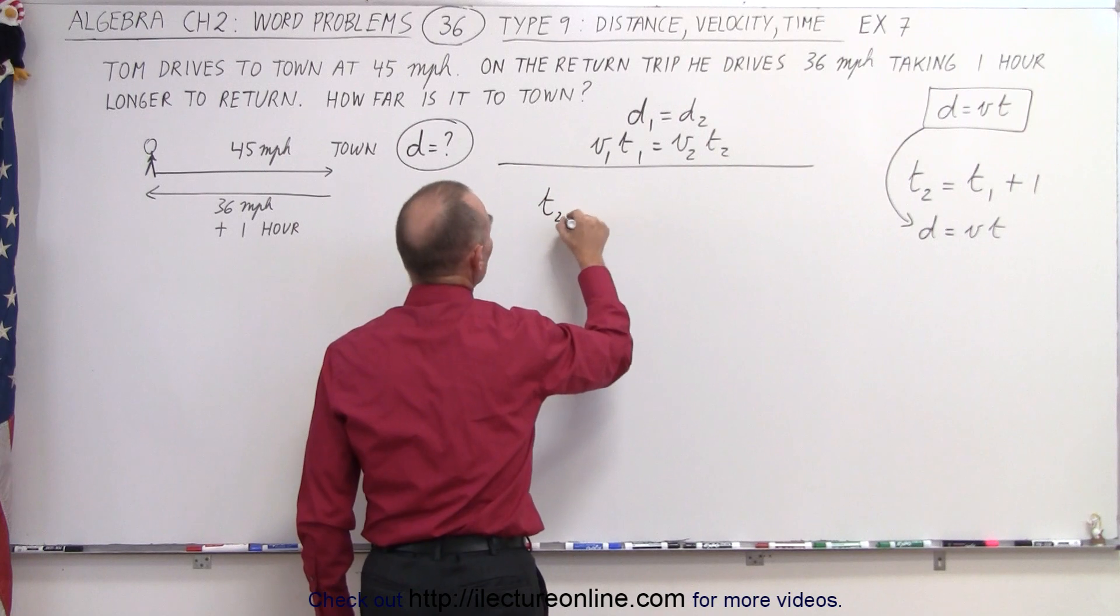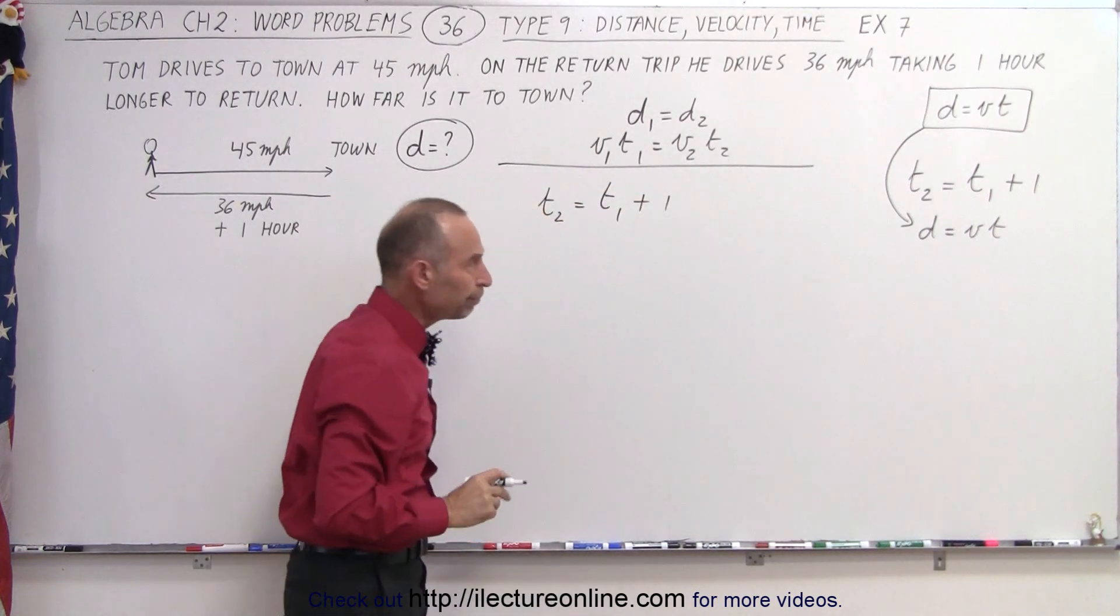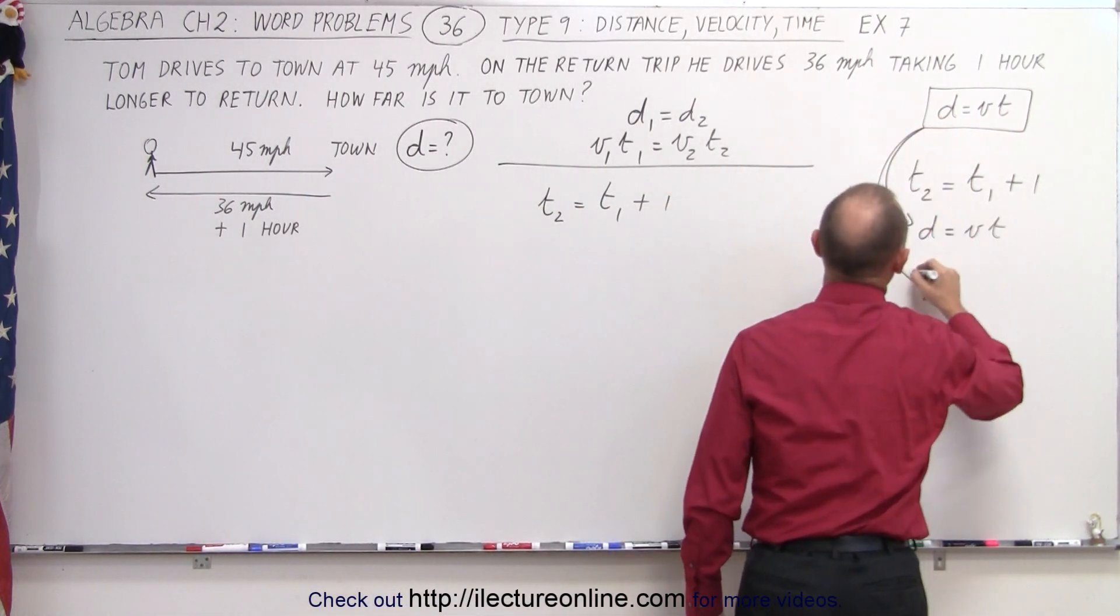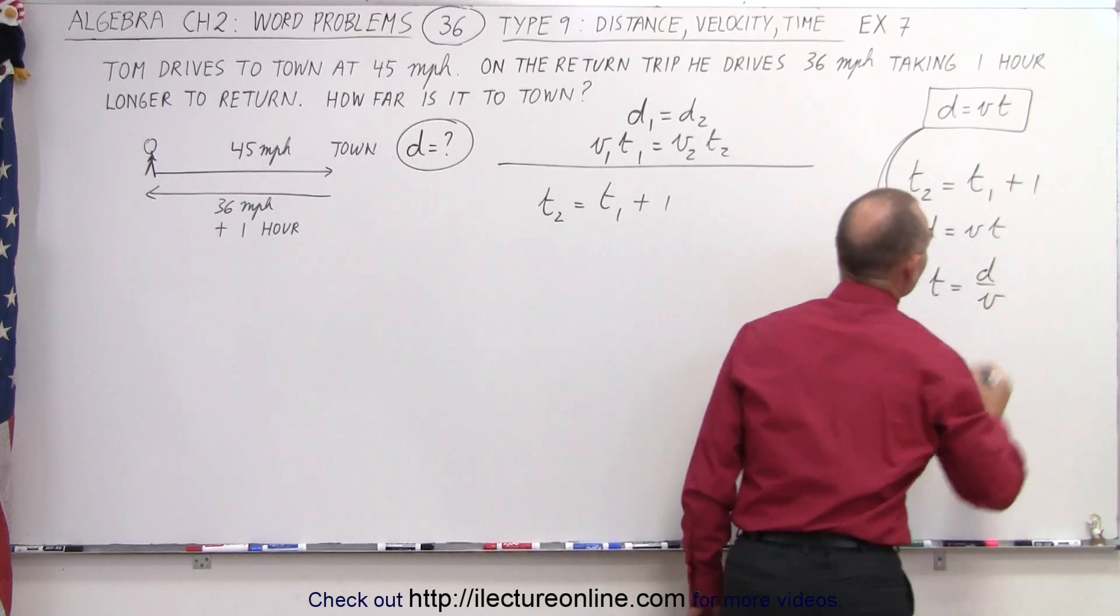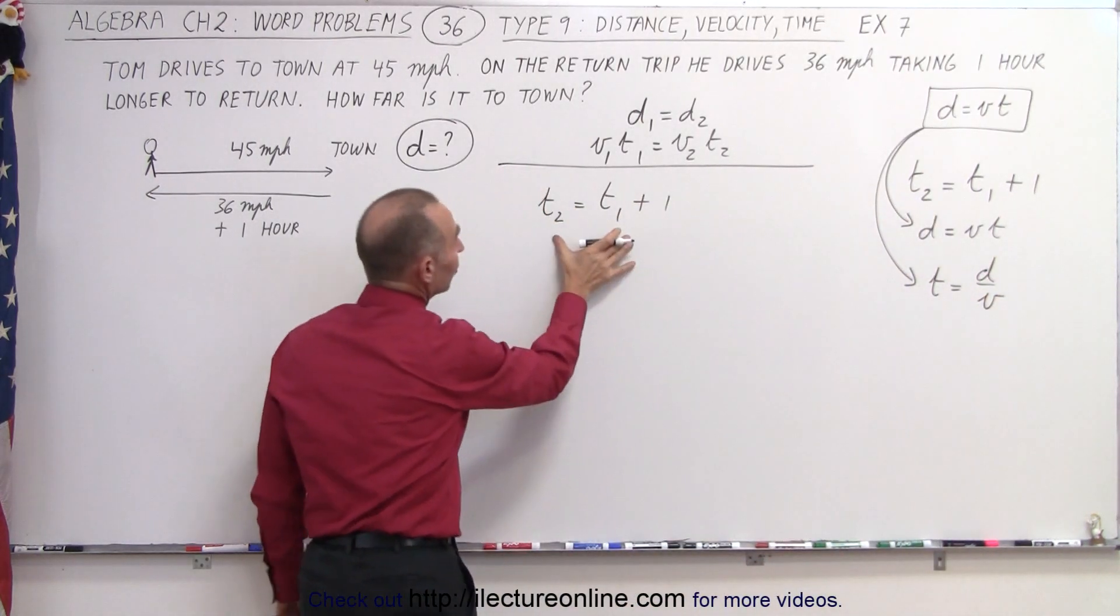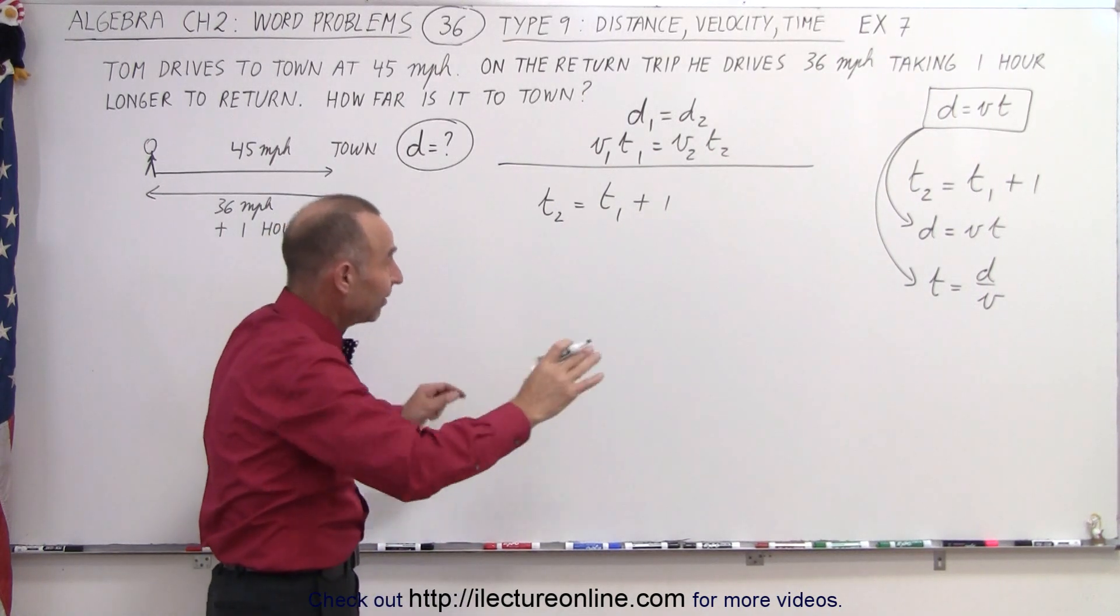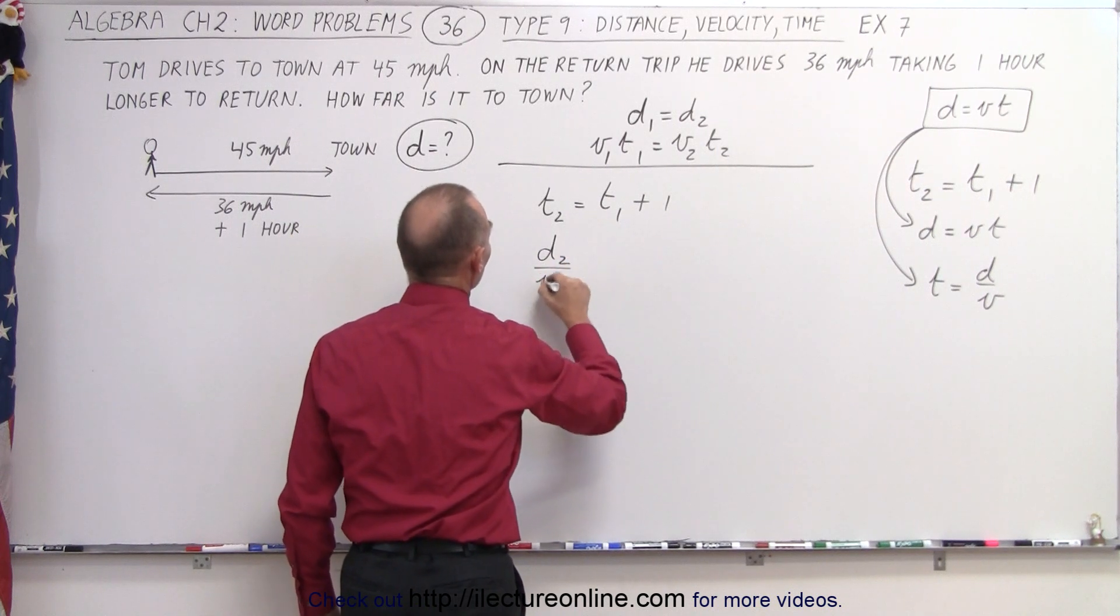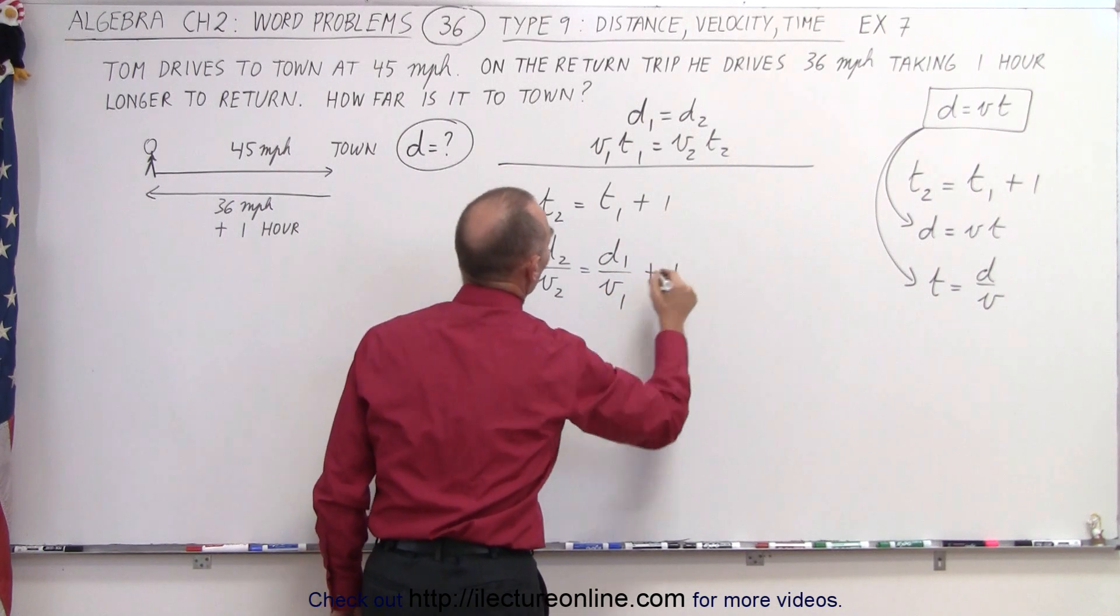We can write that T₂ is equal to T₁ plus 1. Now we can solve this equation right here for time, and if we do that we get time is equal to distance over velocity. So therefore this equation cannot be written since we don't know what the time is, so we need to eliminate the time. We can now write it in terms of distance 2 over velocity 2 is equal to distance 1 over velocity 1 plus 1.